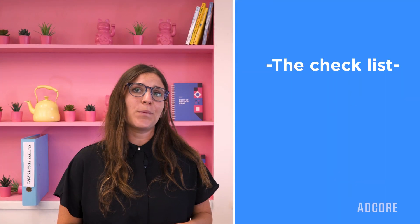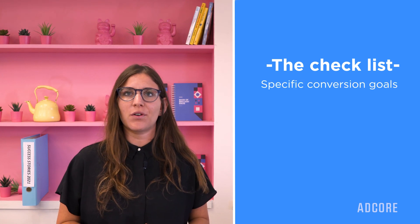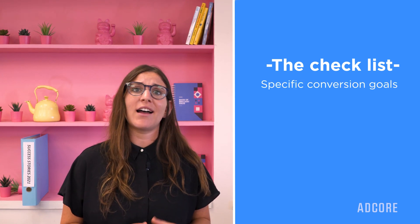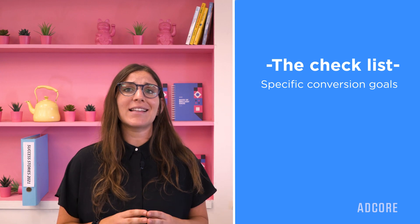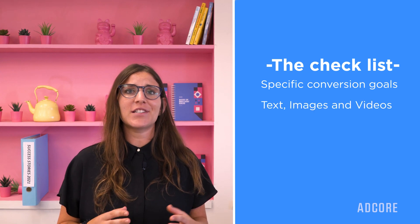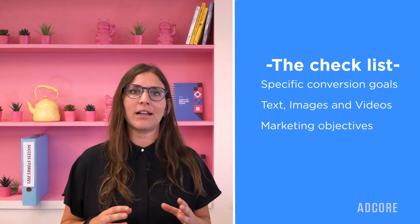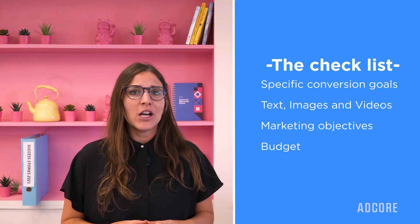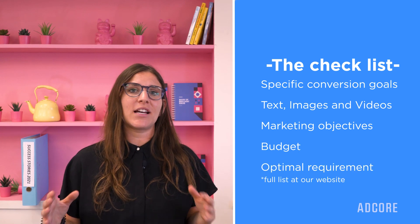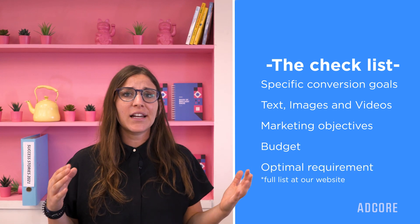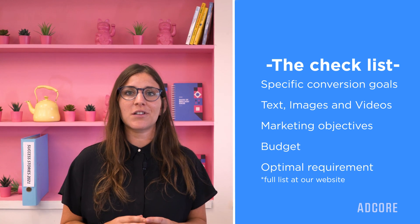Since it's a goal-based campaign, first make sure you have specific conversion goals — driving online sales, for example. In addition, you will need to provide text, images, and videos, and finally the marketing objectives and budget. There are also some optional requirements, such as product feeds, customer lists, linked accounts, and audience signals.